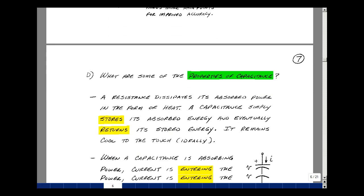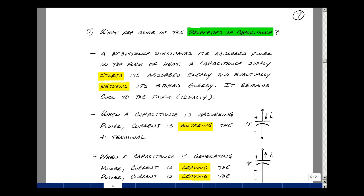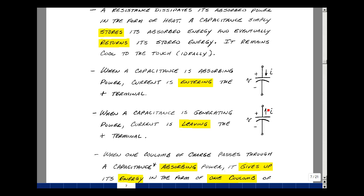Let's talk about some of the properties of capacitance. Now a resistance dissipates as absorb power in the form of heat. Capacitance simply stores its absorbed energy and eventually returns it. So if you were to touch the capacitor, it wouldn't feel warm at all. This would be an ideal capacitance. We'll talk about the real one later in the chapter. Now when capacitance is absorbing power, we saw the current was entering the plus terminal and when it's generating power, the current's leaving the plus terminal.